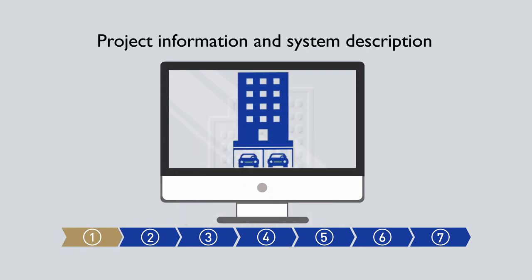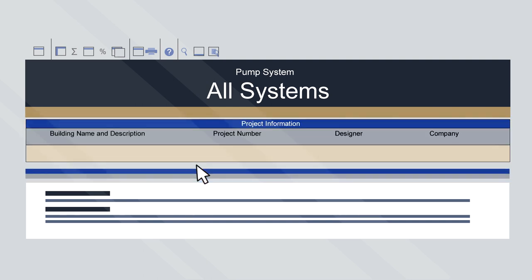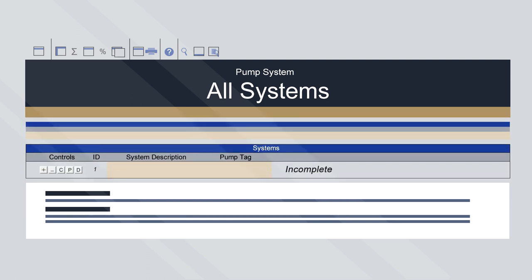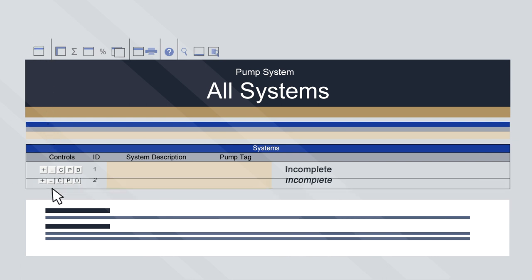Step 1: Enter the project information and system descriptions. When the calculator is open, the All Systems sheet will appear. The gold shaded cells are input cells. Enter the project information into the cells of the first row. Below that is the System section, where each row represents a separate system within the overall project. This needs to be completed for each pump. The calculator defaults to one row, but additional systems may be added by clicking the plus icon. Only one system will be active at any given time. The active system is italicised. You can switch between systems by clicking on the rows or using the Change To button on the ribbon. In this example, a single system will be covered.